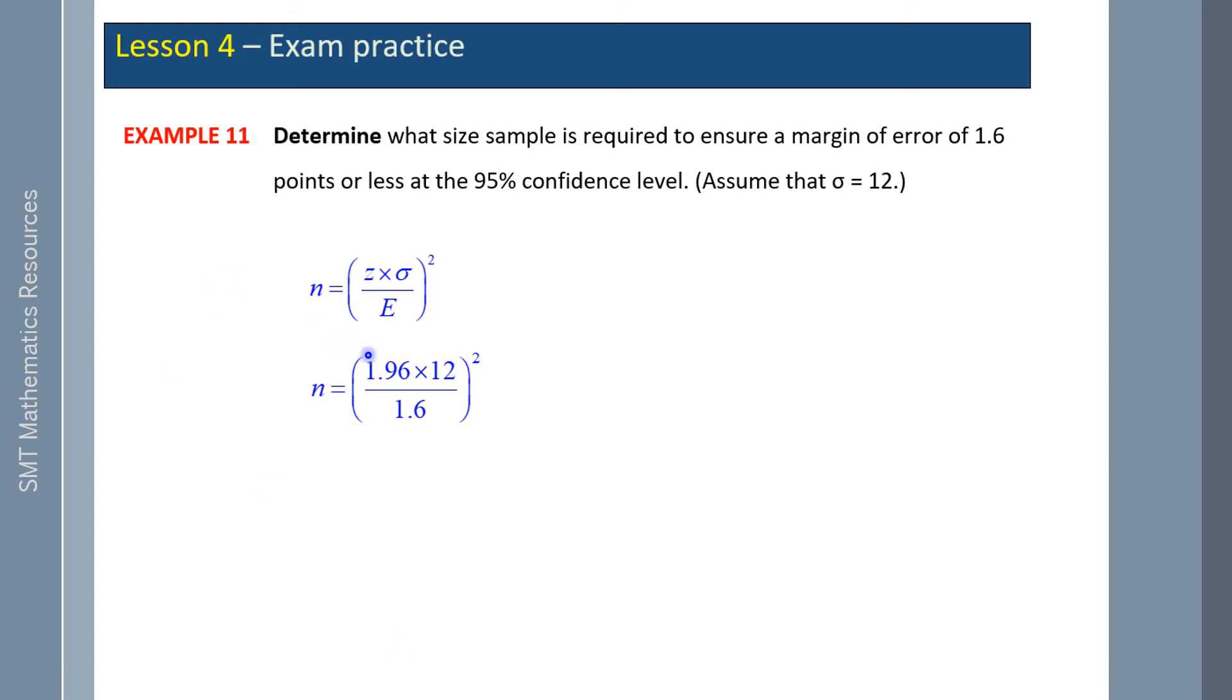95 percent, z is 1.96, sigma is 12, and error is 1.6. Evaluating that, we need a sample size of approximately 216.09.